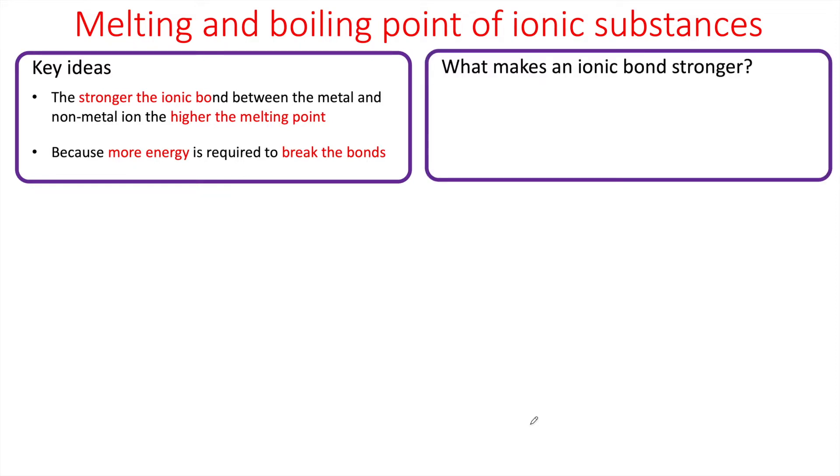But the problem is, what makes an ionic bond stronger? There are two things. First of all, the greater the charge on the ions, for example a 2+ ion rather than a 1+ ion, would have a greater electrostatic attraction. Secondly, the smaller the ionic radius, the closer the ions are together, and again the stronger that electrostatic attraction.